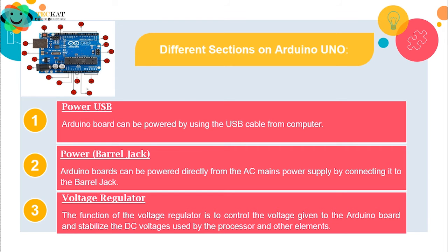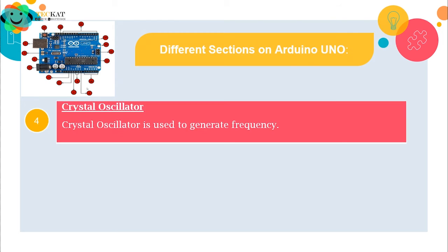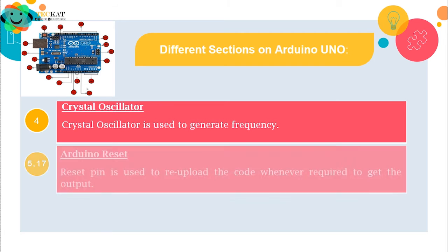Next we have the Crystal Oscillator. We have already discussed 8 MHz and 16 MHz frequencies. Those frequencies are generated by the crystal oscillator, which generates the different operating frequencies for the board.